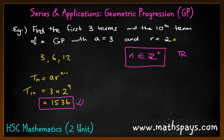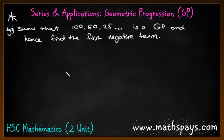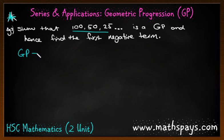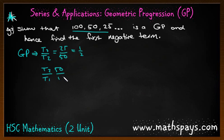The next question I wanted to show you is one we also did with our arithmetic progression. It says: show that 100, 50, 25 is a GP and hence find the first negative term. Looking at that, it does look like a GP. To test it, for a GP we want to show that T3 divided by T2 is equal to T2 divided by T1. So T3 divided by T2 equals 25/50, which is a half. And 50 divided by 100 is also a half. Therefore T3 over T2 equals T2 over T1, therefore it is a GP.